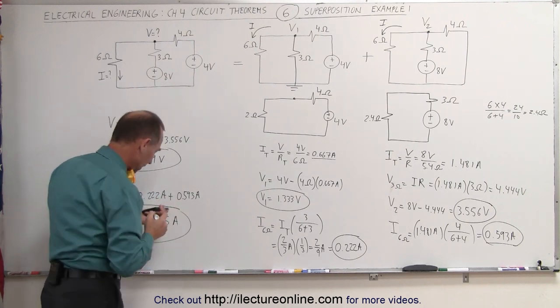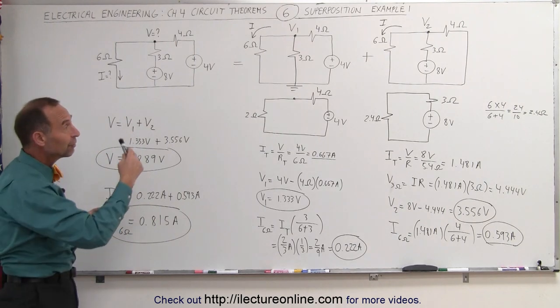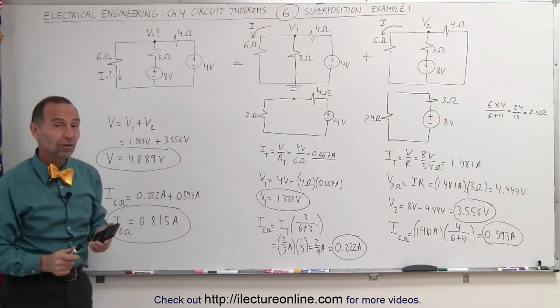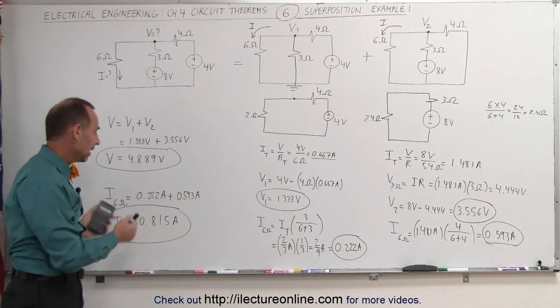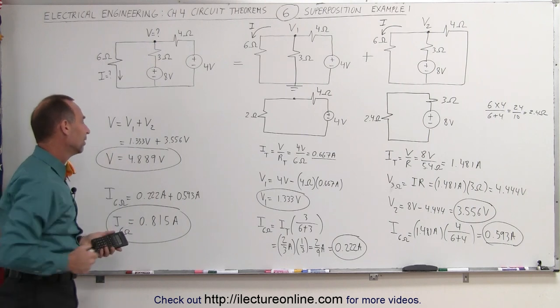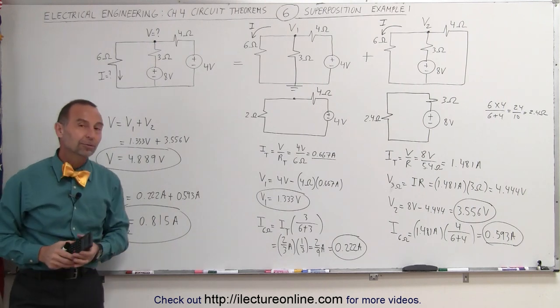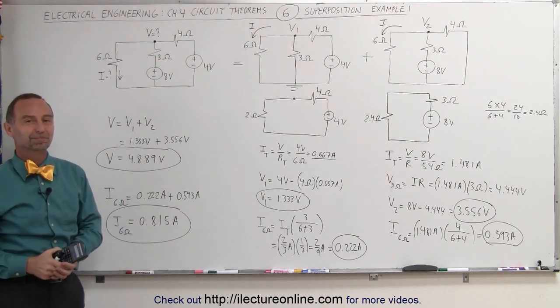Once you find the voltage and current for each individual source, you simply do an algebraic sum to find the total current and the voltage at the node. That's how superposition is applied.